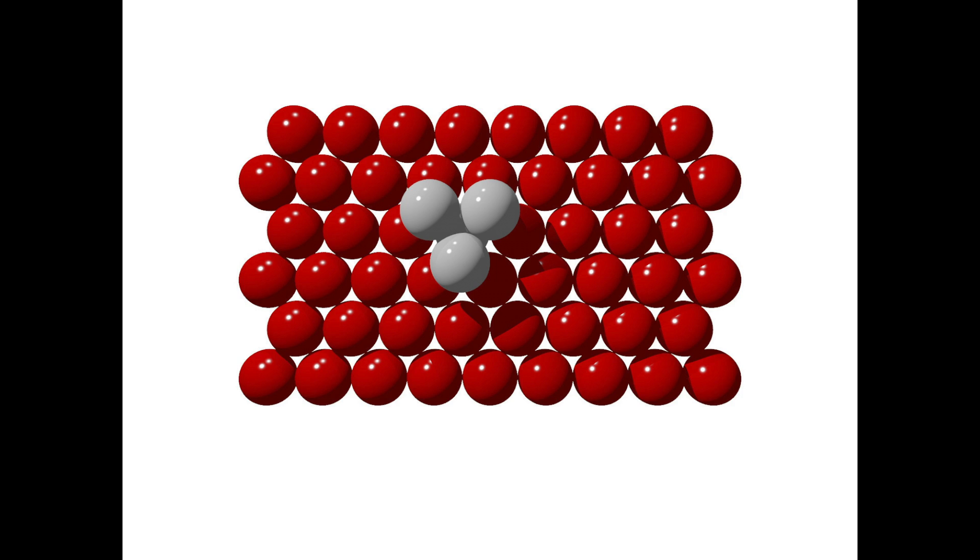Notice now we are looking at the base of a tetrahedron. This tetrahedron is oriented in the opposite direction to the first one we looked at. The tetrahedron void defined by these spheres is a T-minus hole.